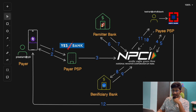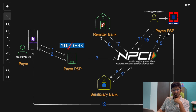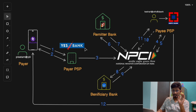In Step 4, the NPCI network contacts the Payee PSP — the merchant's PSP — to ask for the merchant's account details based on the VPA of the payee. In Step 5, the Payee PSP responds back to NPCI with the merchant's account details like their bank account number, merchant ID, etc. This is done to confirm that your payment will be credited to the correct recipient.